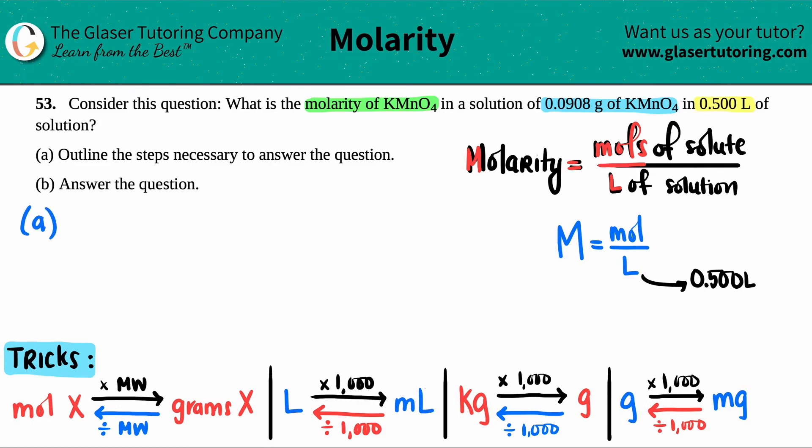So for letter A, step one is to convert the 0.0908 grams of KMnO4 into the moles of KMnO4. Because then I'll have the correct units. I'll have the moles which we will use for the top. They already gave us the liters.